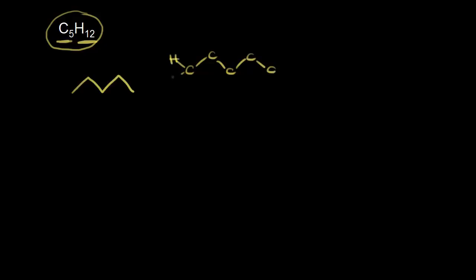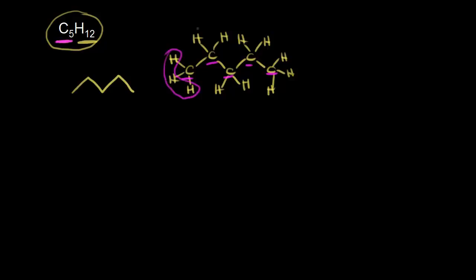The carbon on the far left has three hydrogens, the next carbon has two, the next two, then two more, and finally three hydrogens for the last carbon. Counting everything up: we have five carbons, so that's C5, and for hydrogens: three plus two is five, plus two is seven, plus two is nine, plus three more for a total of 12. So C5H12 is the molecular formula for this compound.